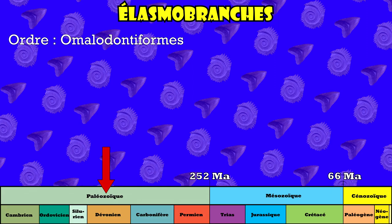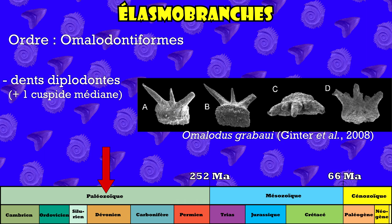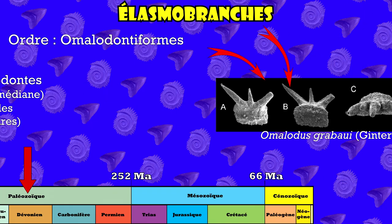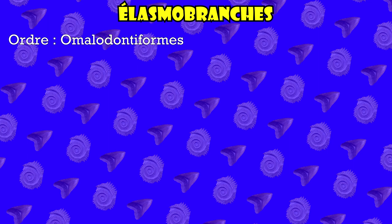Les dents des homalodontes sont dites diplodontes. Ça signifie tout simplement que la dent a deux cuspides bien prononcées, associées à une cuspide médiane située entre les deux grandes. Des fois, l'espace entre les deux grandes cuspides et la médiane est occupé par des cuspides intermédiaires. Ça fait beaucoup de cuspides tout ça. Il est composé de deux familles, les astéchodontidées et les homalodontidées.